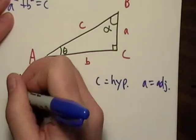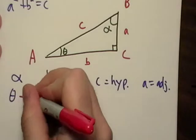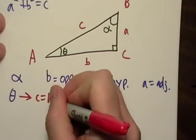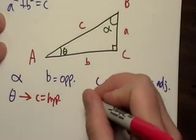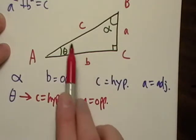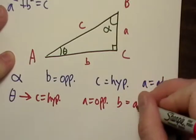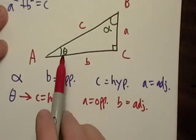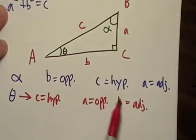Now let's look at angle theta. With respect to angle theta, it looks like C is still going to be the hypotenuse. A is going to be my opposite side. And it looks like B is the adjacent side. So the adjacent side is now on my right-hand side with respect to theta. Here's opposite is A, hypotenuse is C, so B must be the adjacent side.